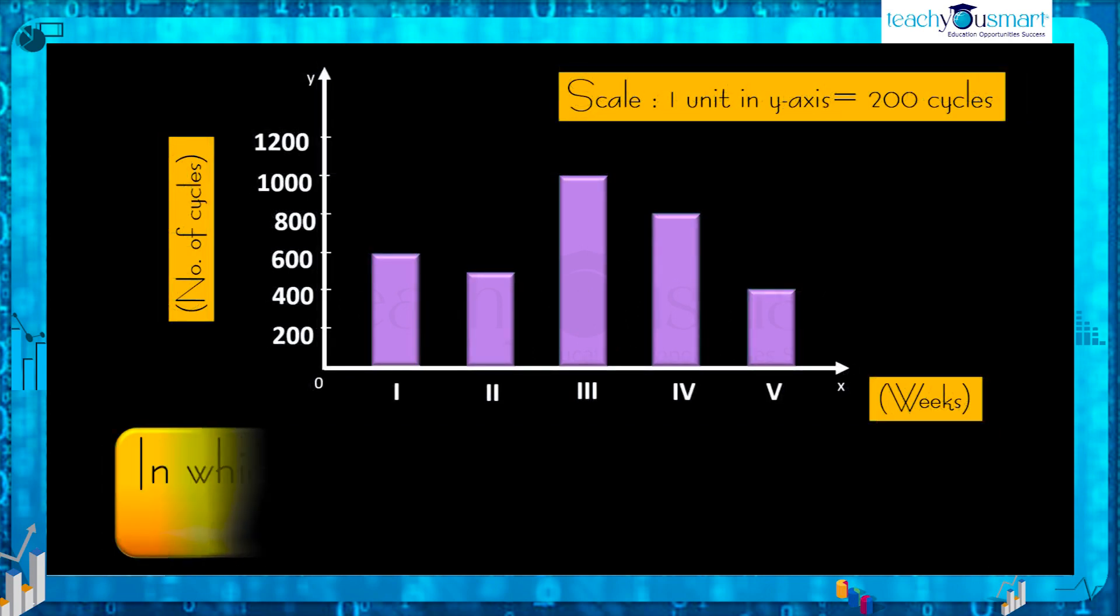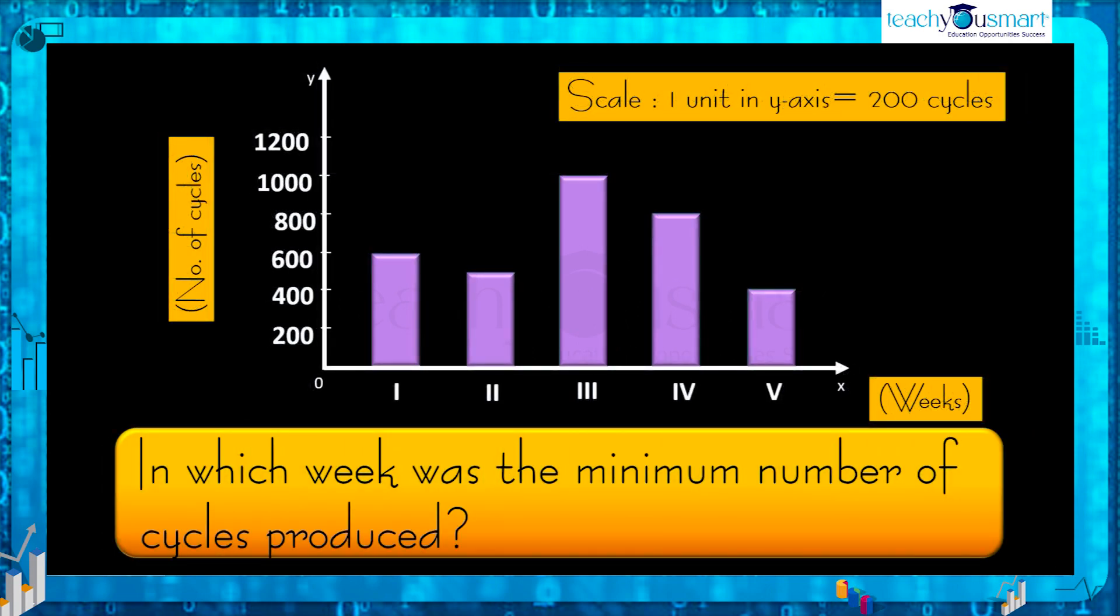Next, in which week was the minimum number of cycles produced? From the graph it's clear that the minimum number of cycles was produced in the fifth week.